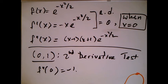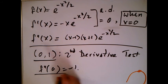And the second derivative test then tells us the point (0,1) is a relative maximum, and then we'll write that down as a conclusion.